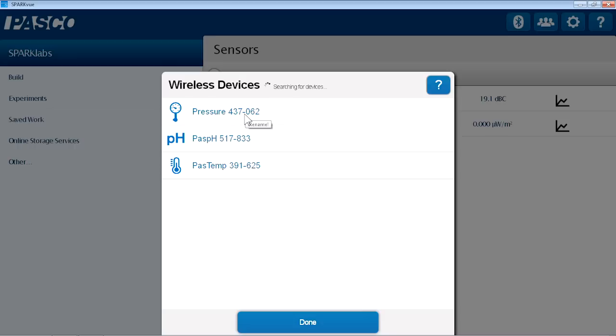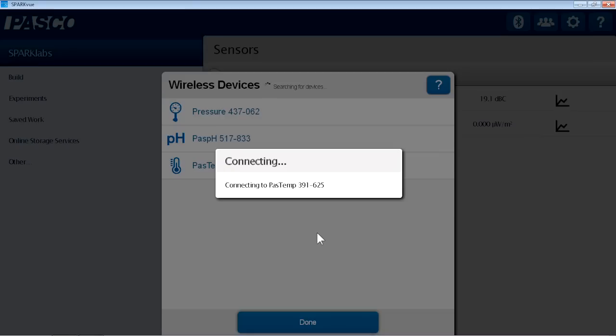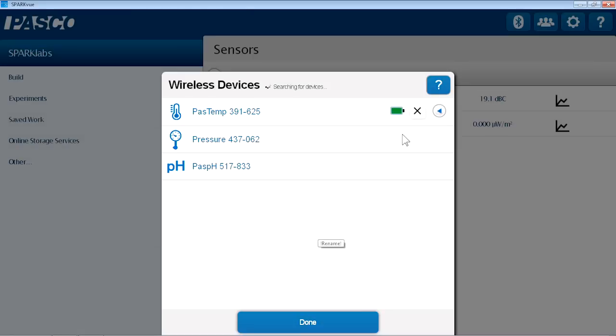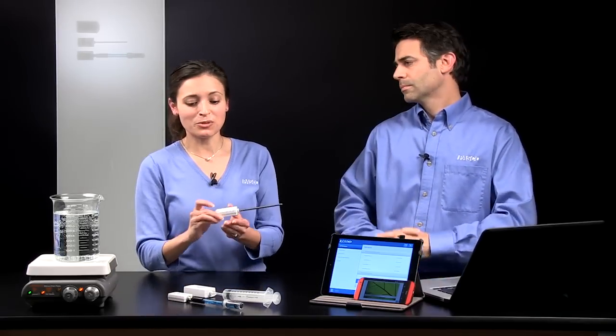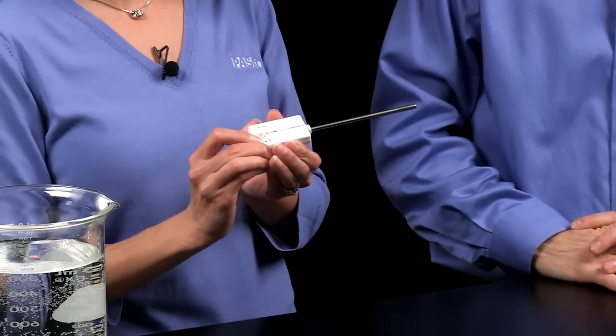And if I have a class set of a particular measurement, I can identify them based on their unique ID number. So I'm just going to touch the temperature sensor. It's going to connect to that sensor. I can see that it's connected. I'll hit Done. And I can see on the sensor that the Bluetooth light is now flashing green, indicating that it's connected.